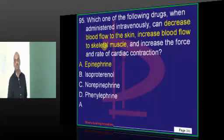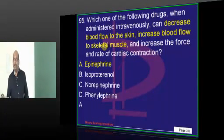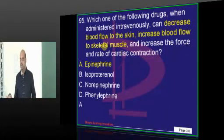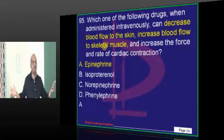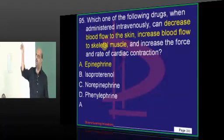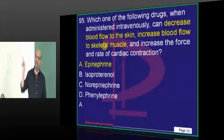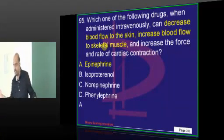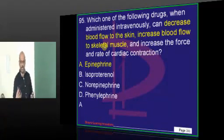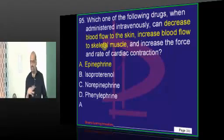Epinephrine versus isoprenaline — what are the differences when it comes to alpha-1, alpha-2, beta-1, and beta-2 receptors? You must be very sure which is more selective to what and what happens with each.